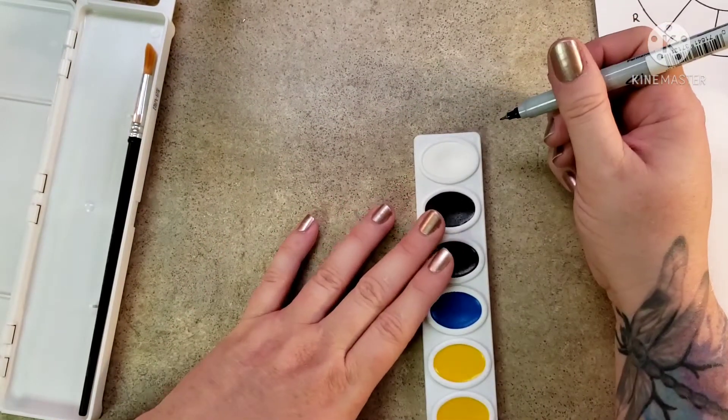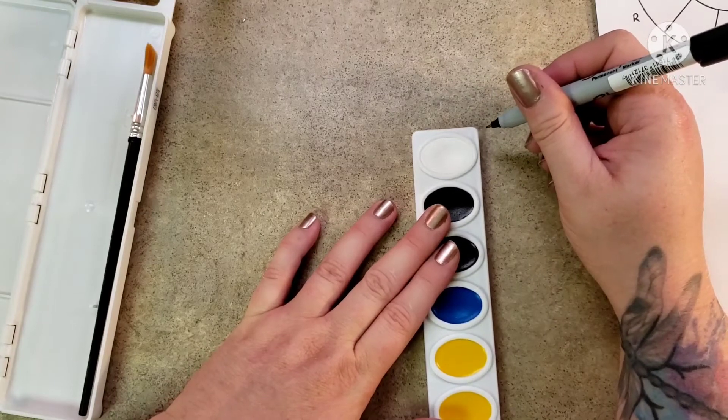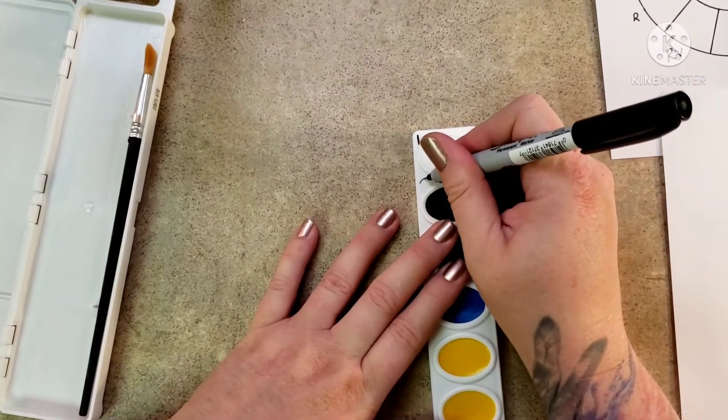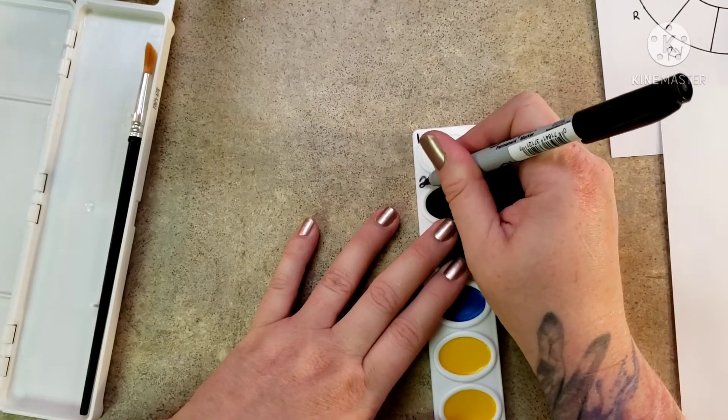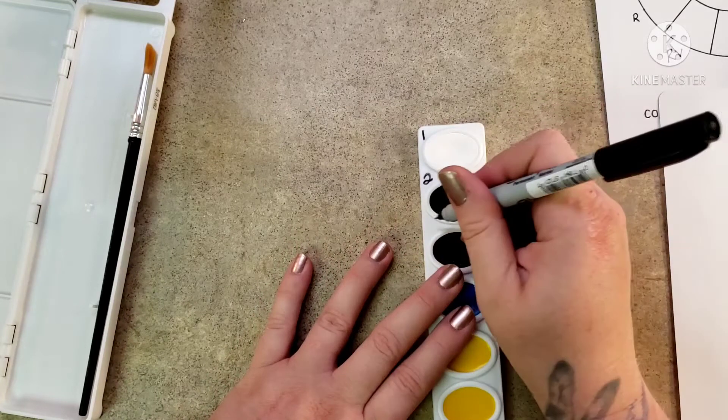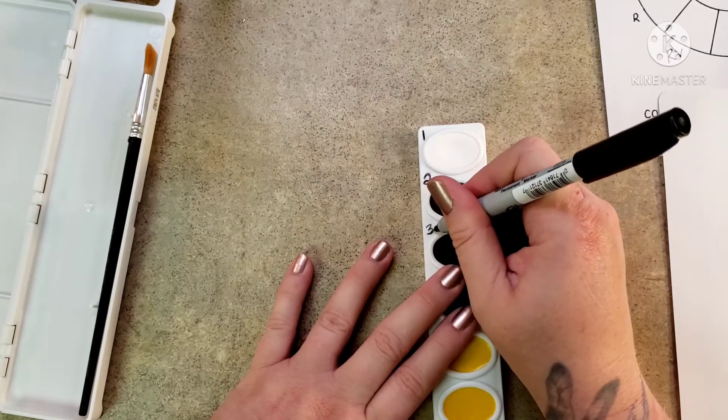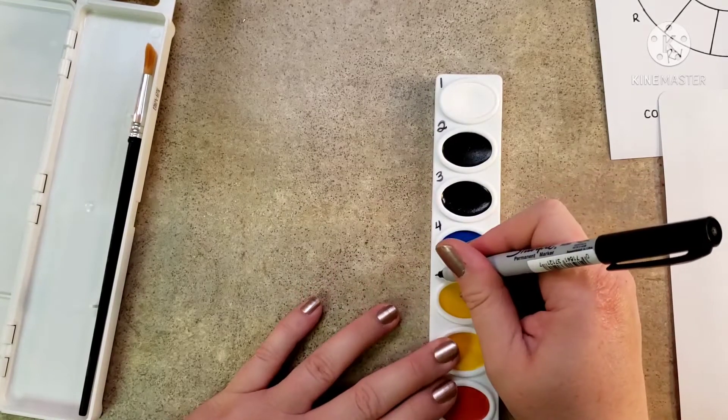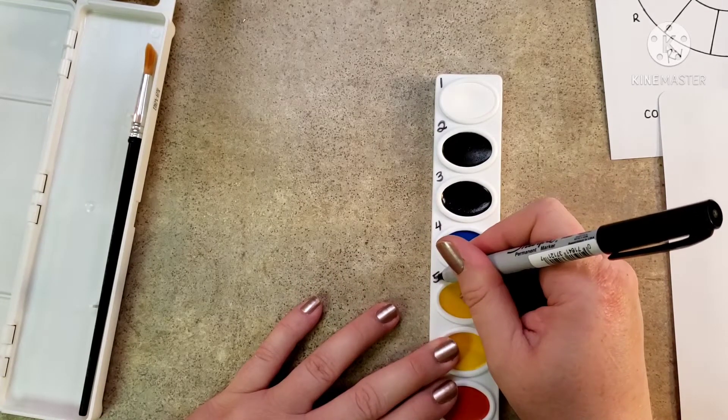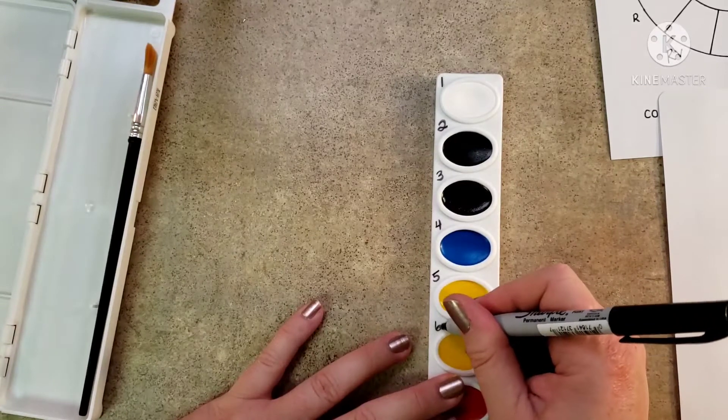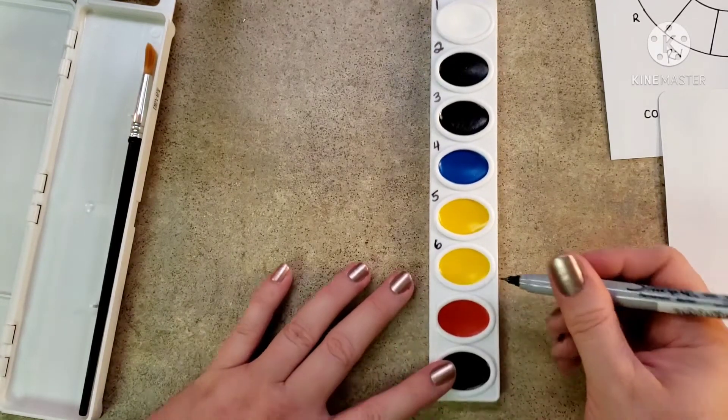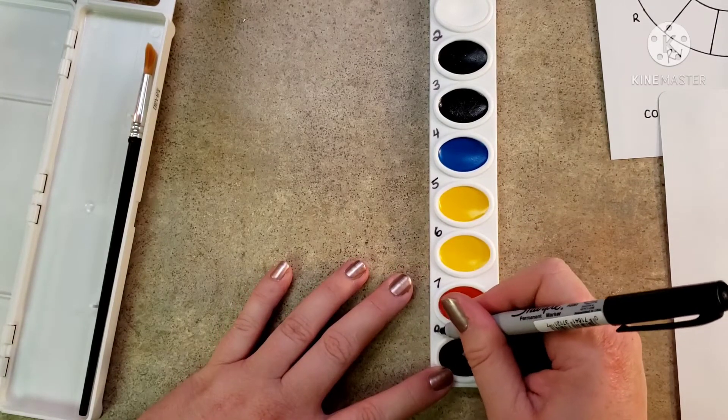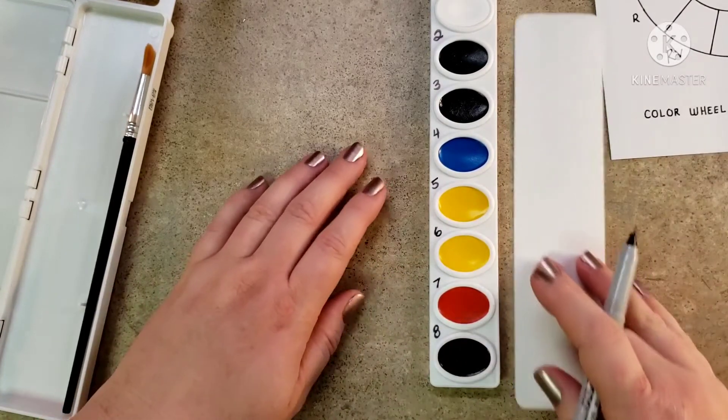So number one, and yes you can write right on here with your sharpie. Number two, number three, four, five and six are the same, seven and eight. We're going to label them on here to create like a key of what each color is.